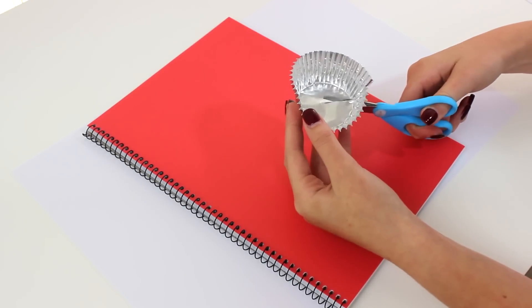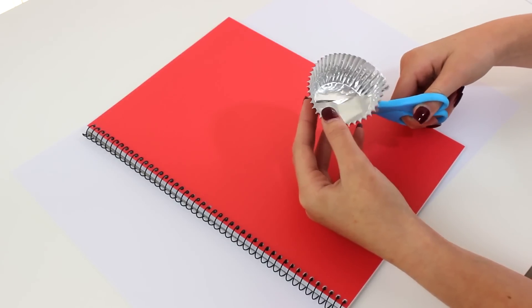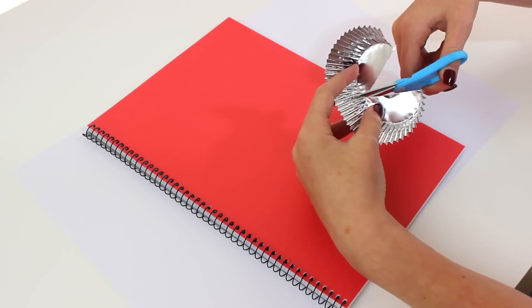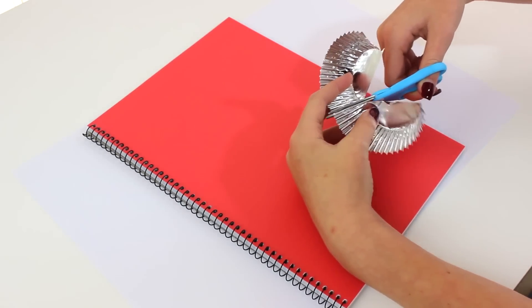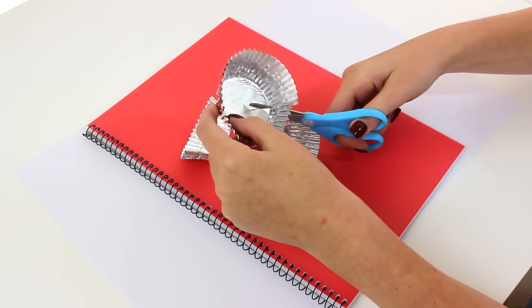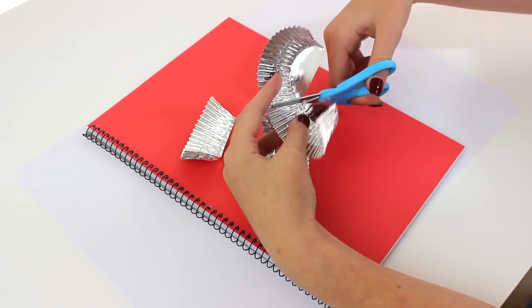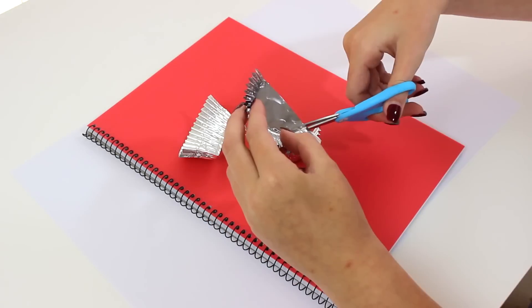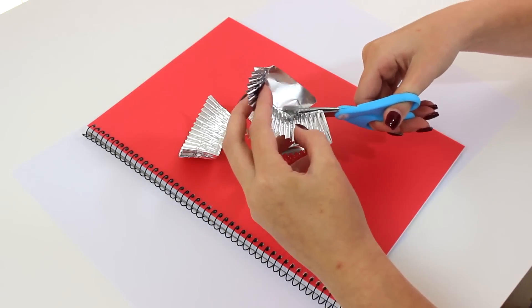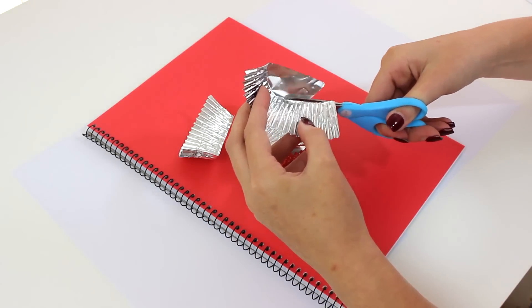And you can use any kind of patty pans you would like to match your pom-poms and your notebook. Then take your scissors and cut off the bottom of the patty pan so you just have one long side of the patty pan.